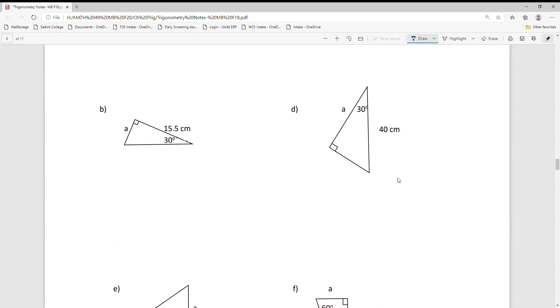For B, this is the angle I care about. This would be adjacent, this one opposite. When I have opposite and adjacent, that pushes me into the tan equation. Sub in what I know: tangent 30 is A over 15.5. Solving for A would be tan 30 times 15.5, and your calculator can evaluate that. You should get 8.9 centimeters.